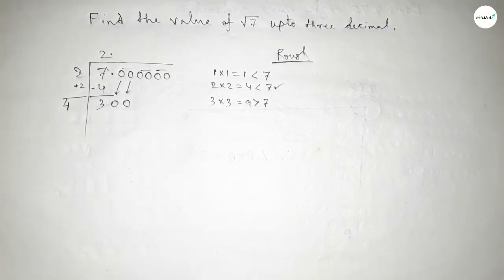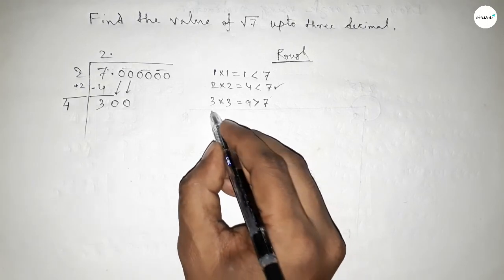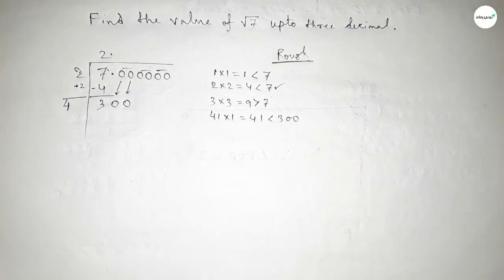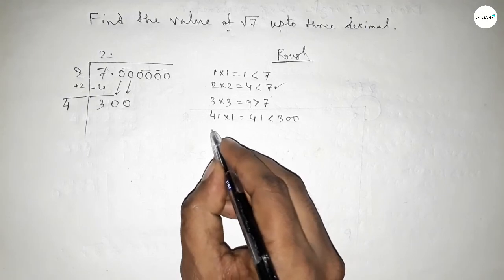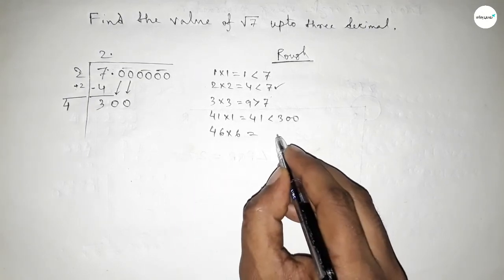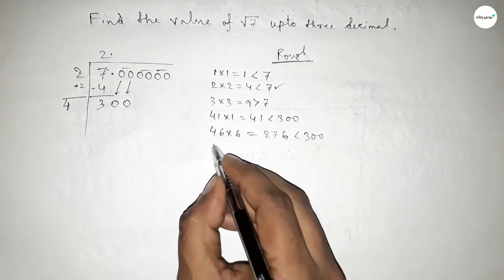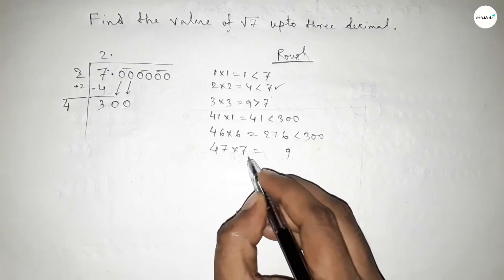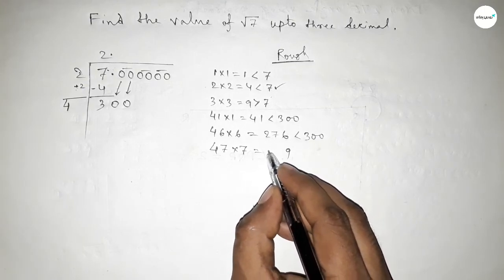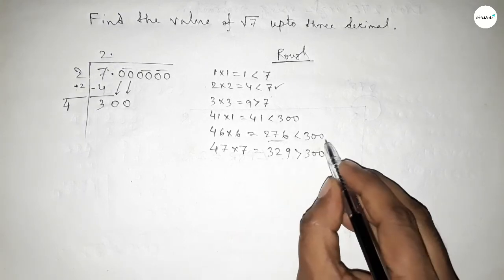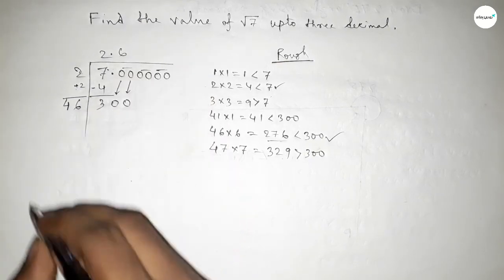Now what should be put beside 4? We need a digit such that 4-something multiplied by that digit is less than 300. If you put 1: 41×1=41, less than 300. If you put 2: similarly less. If you try 6: 46×6 is less than 300. If you put 7: it becomes greater than 300. So we take 6.